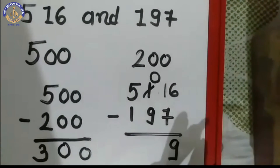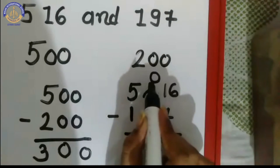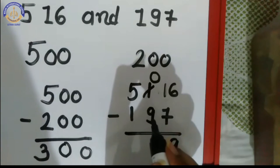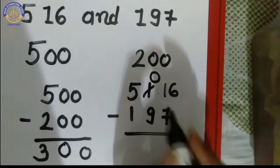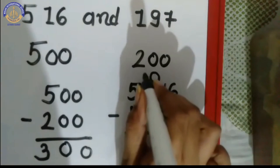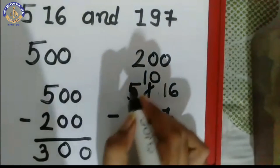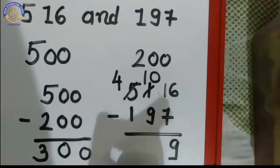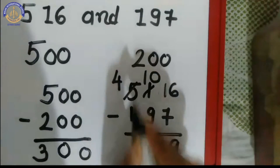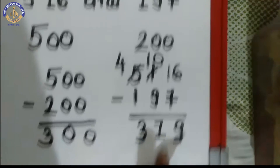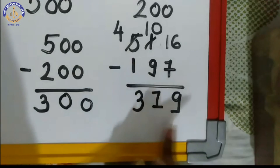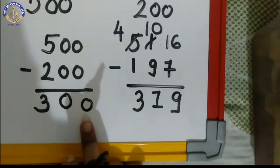Now, 0 minus 9 — is that possible? No. So we borrow again. We borrow 1 from the hundreds digit 5, which becomes 4, and the 0 becomes 10. Now, 10 minus 9 is 1. And 4 minus 1 is 3. So the exact difference is 319, and the estimated difference was 300.